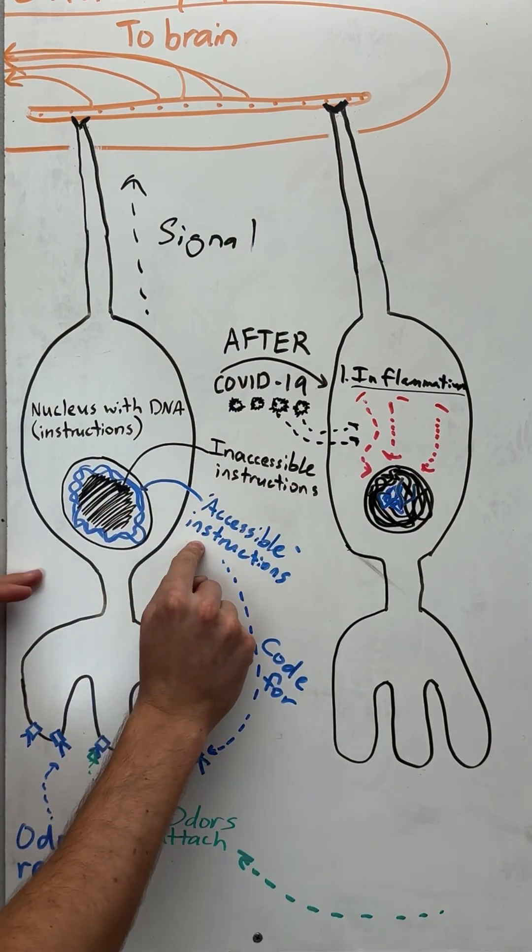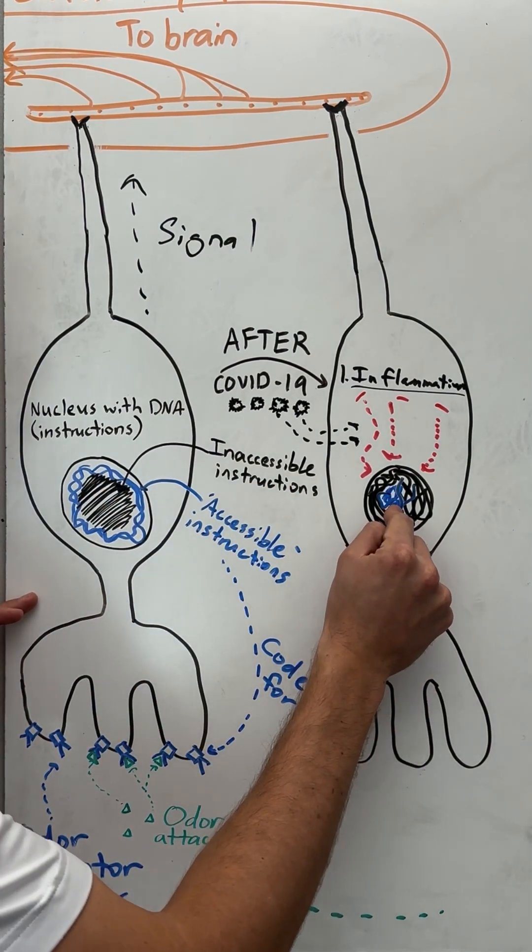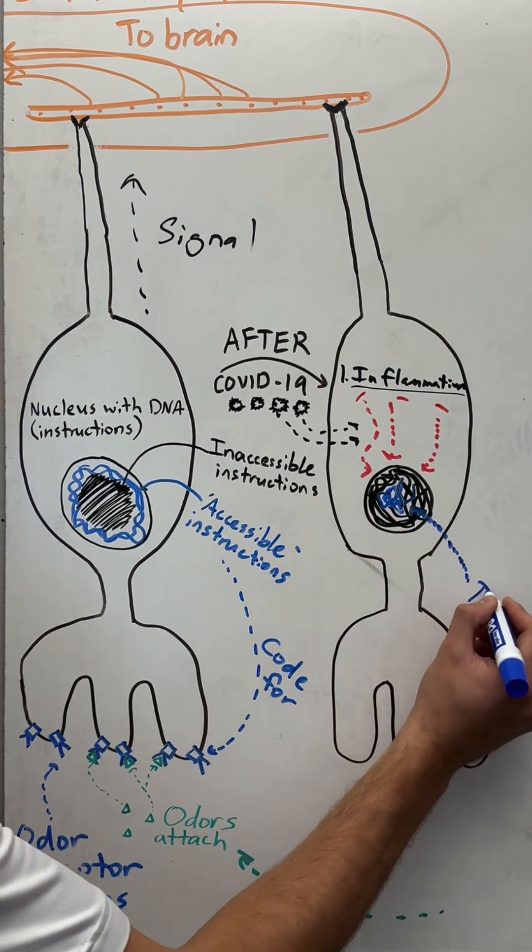So as you can see, the accessible instructions that coded for those proteins are now in the center of the nucleus. Since they're in the center of the nucleus, they are now inaccessible.